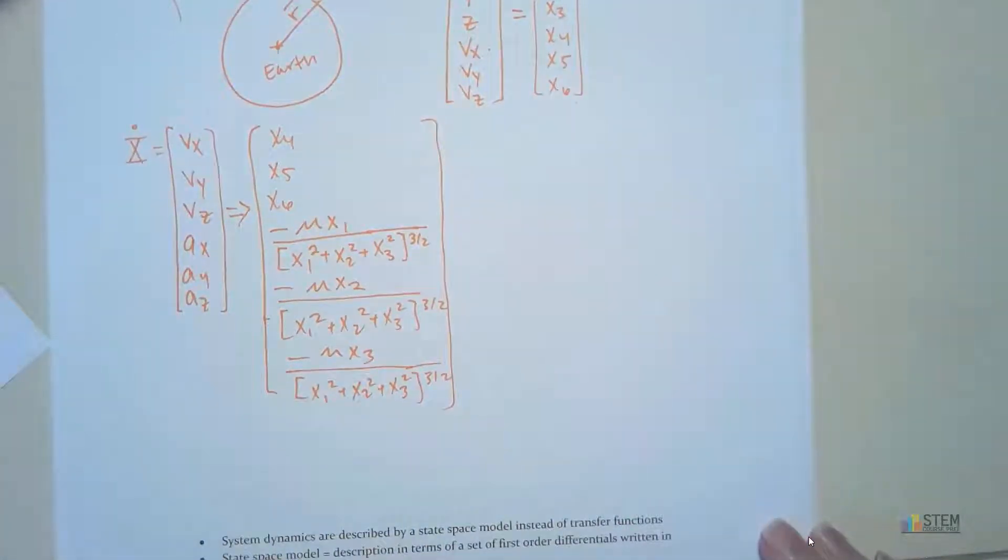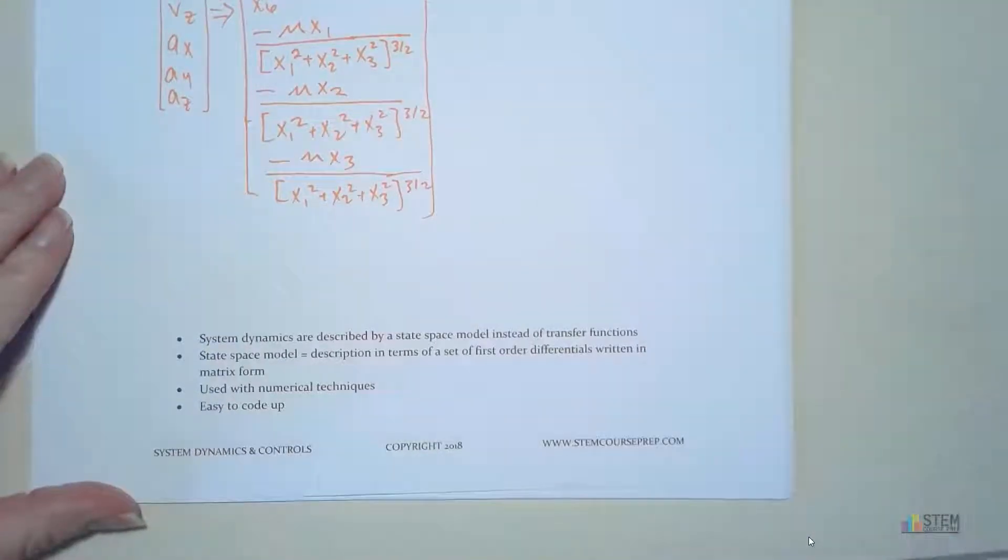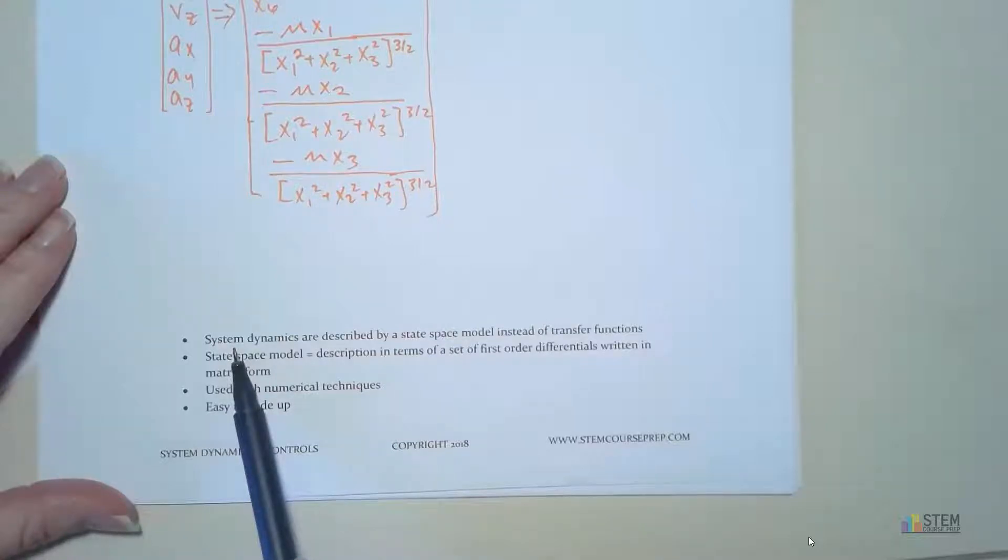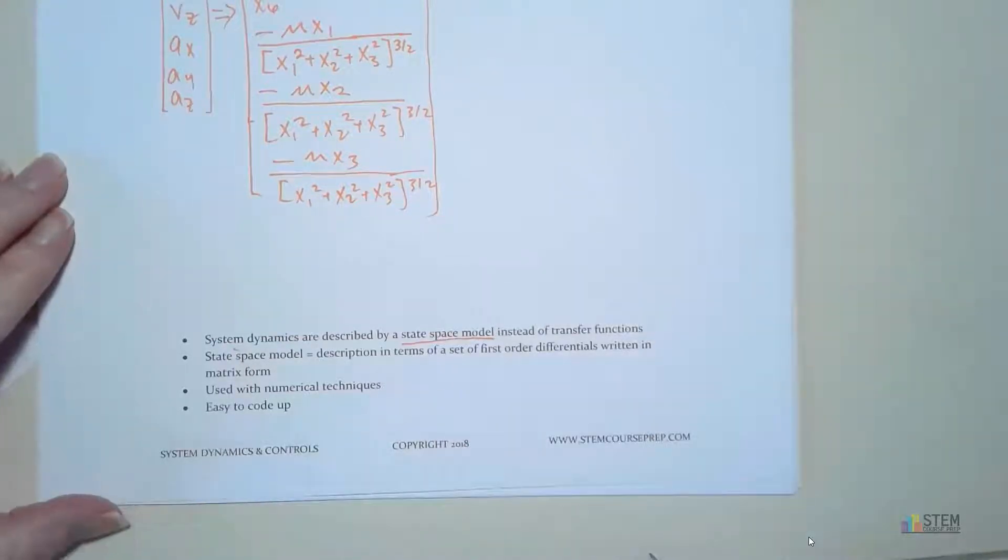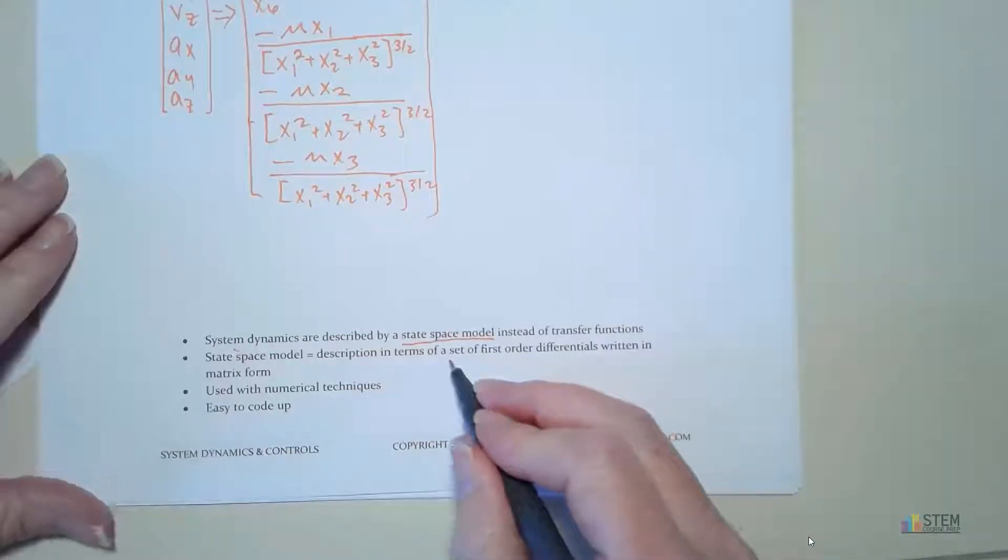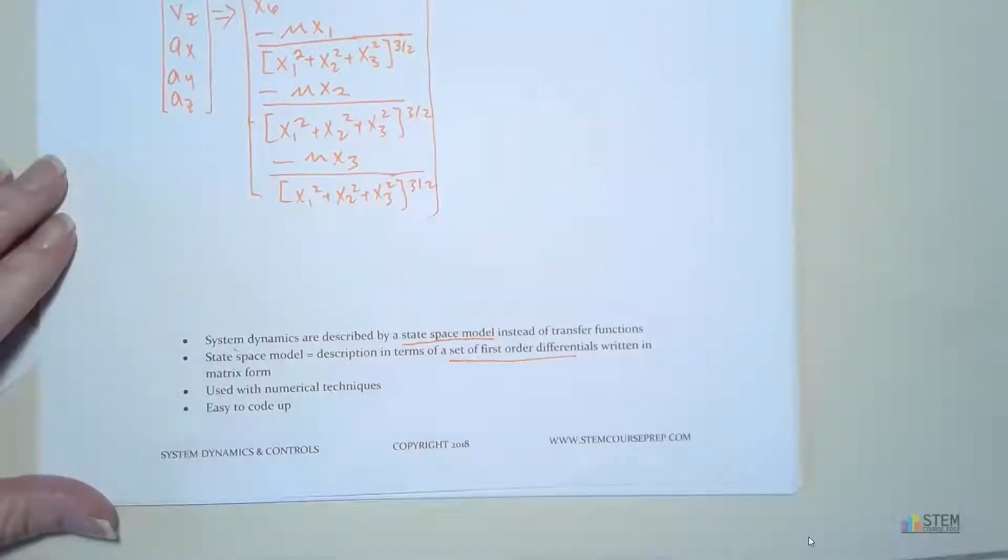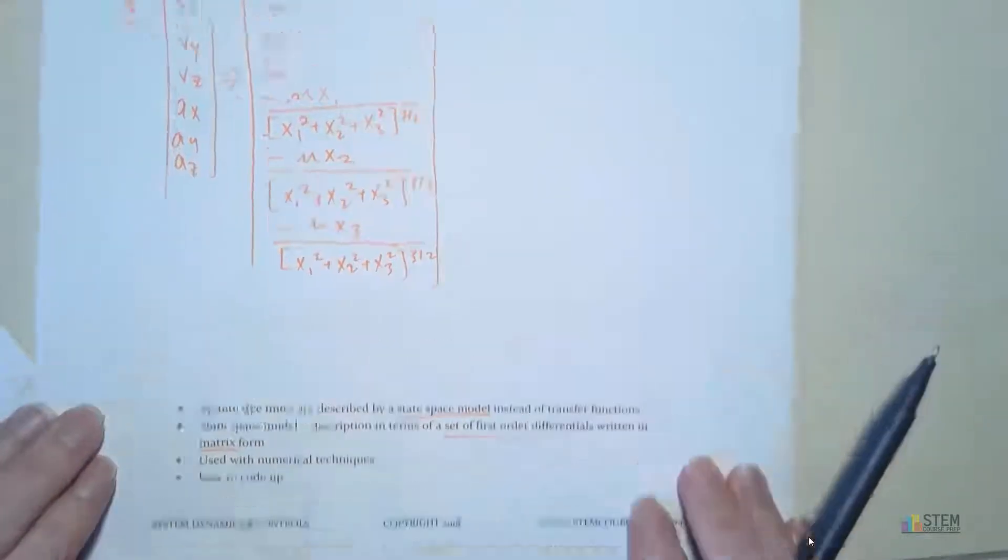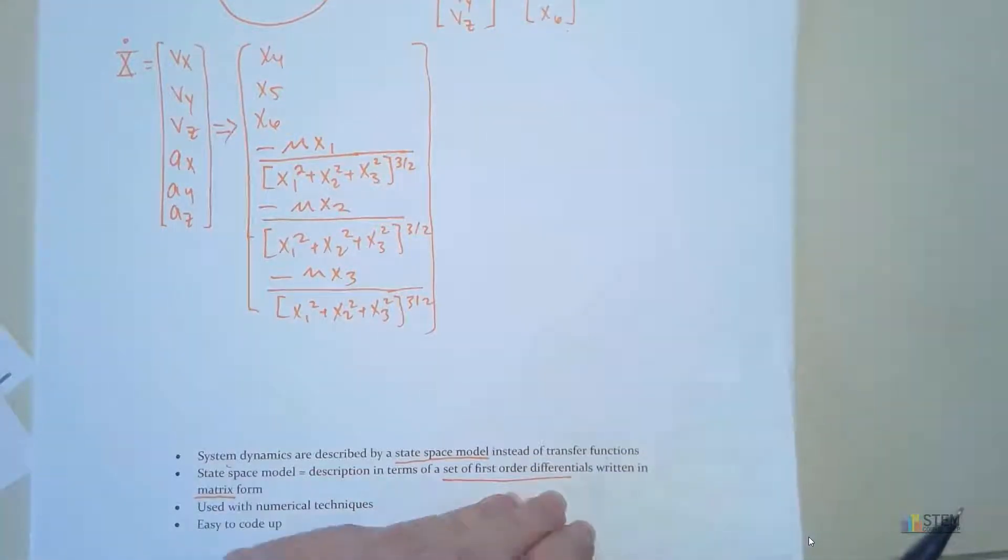So now let's move down to the bottom here. So in this case where we have state space, our system dynamics will be described by what we're going to call a state space model instead of transfer functions. So we're going to get away from transfer functions for a little bit. Not too long, though. They'll be back. Now, the state space model is essentially just a description that's in terms of a set of first order differentials. So that's what you saw up above. We had this set of first order differentials. We're going to write it in matrix form. And you do that because this is going to be used with numerical techniques. And the benefit here, it's all in matrix form, so it's really easy to code this up. Especially if you're using like MATLAB, where it's easy to work with vectors and matrices. So let's get started.